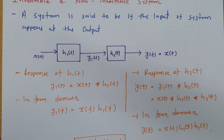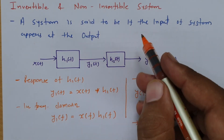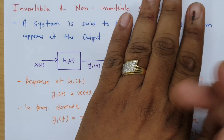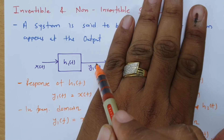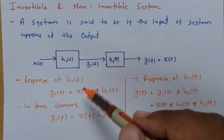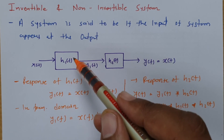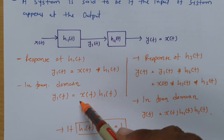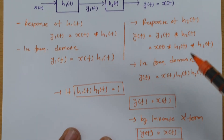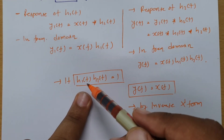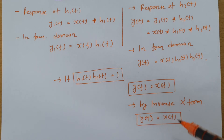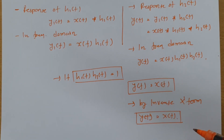So this is the basic thing to keep in mind: the system is said to be an invertible system only if the input is appearing at the output side. If input is not appearing at the output of the given system, you cannot have another system that retrieves your input again. Output is the convolution of input and system in the time domain, and multiplication in the frequency domain. To have an invertible system, the condition is H1(f) · H2(f) = 1. Only then is Y(f) = X(f) possible, and you can apply the inverse transform to retrieve your original signal at the output side.